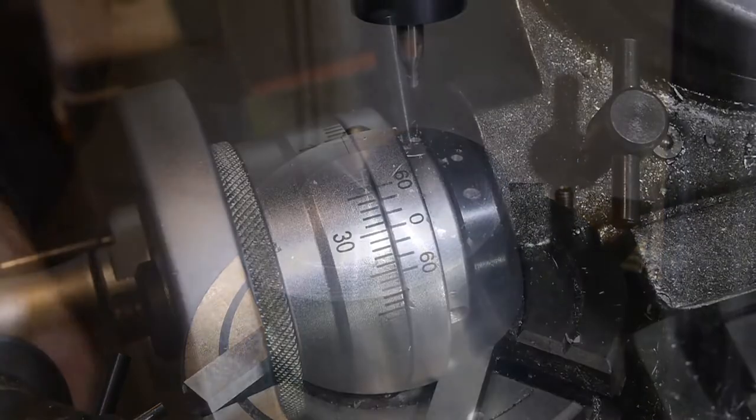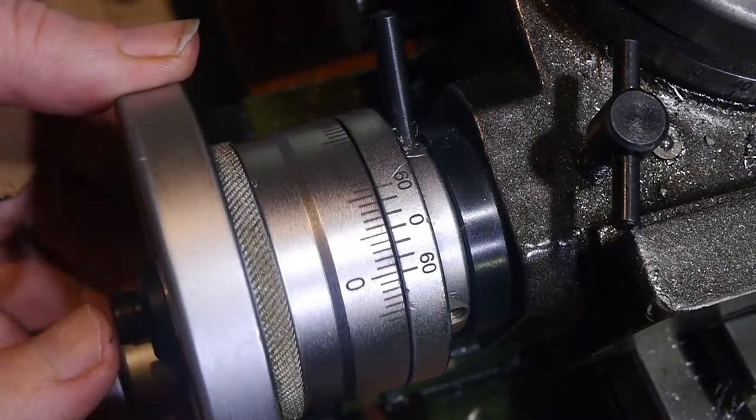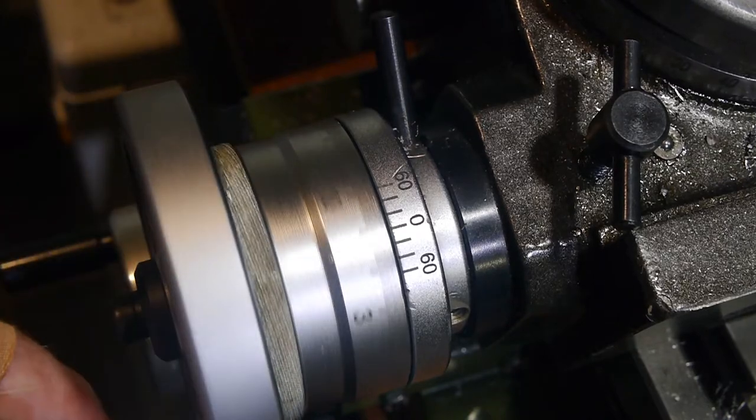I decided the symmetry of 10 holes was more appealing than 9 for the 9 screwdrivers, so I separated the holes by 36 degrees on the rotary table.